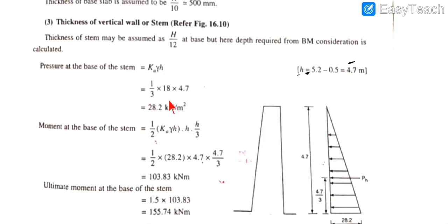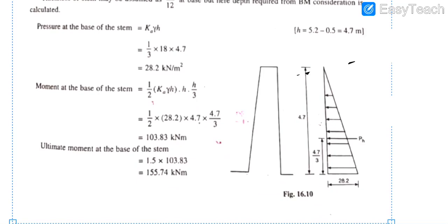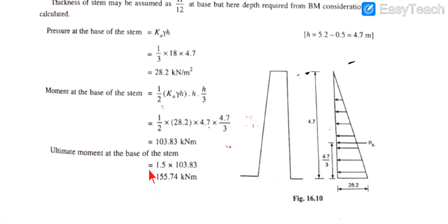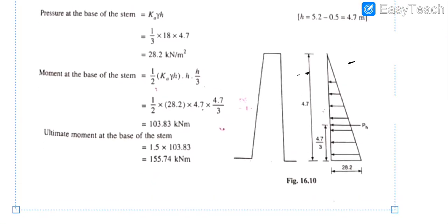Using the triangular earth pressure distribution with height H = 4.7 m, the total force PA = ½ × Ka × γ × H² = ½ × (1/3) × 18 × 4.7² = 28.2 × 4.7 × (h/3). The bending moment at the base of the stem is calculated as 103 kN·m. The ultimate (factored) bending moment = 1.5 × 103 = 155.74 kN·m.